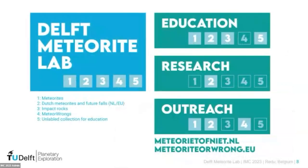The collection is currently divided into five sub-collections: a general meteorite collection, the Dutch meteorites available in the Dutch language, impact rocks, a sizable collection of meteorwrongs, and a collection of unlabeled objects — which may be meteorites or meteorwrongs — that we use in education. Depending on the protocol or program, whether education, research, or outreach, different sub-collections can be used.